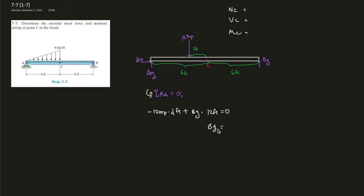So plug everything into your calculator. By should be, let's see, 48 divided by 12, that is 4 kip over here.